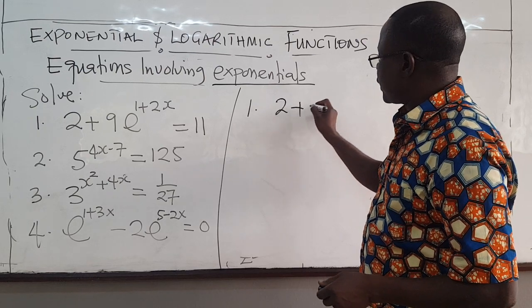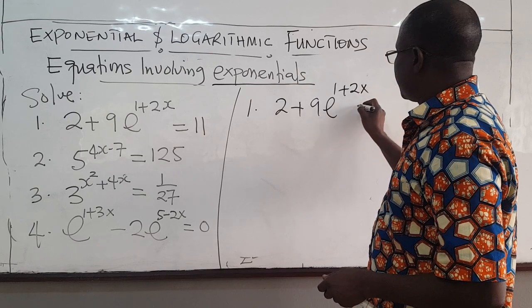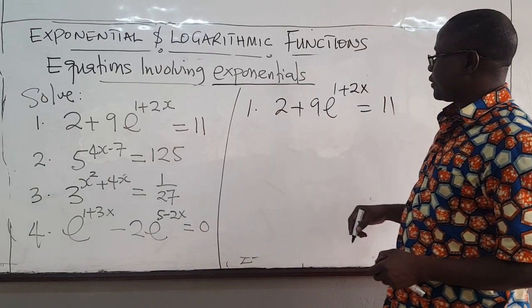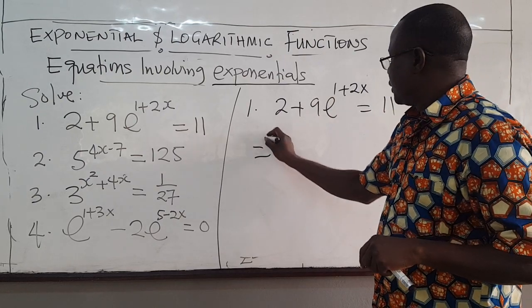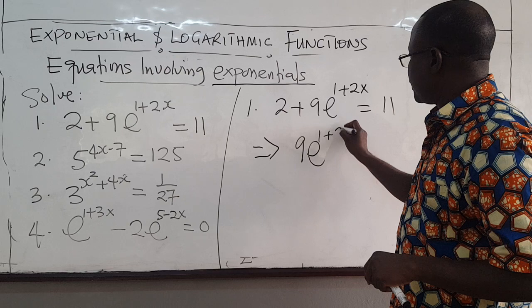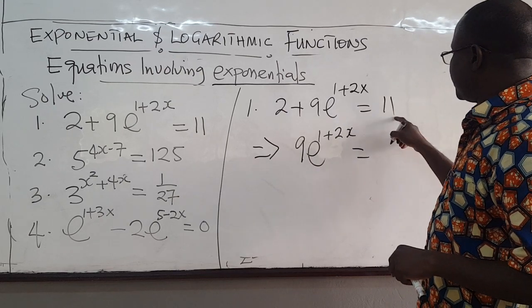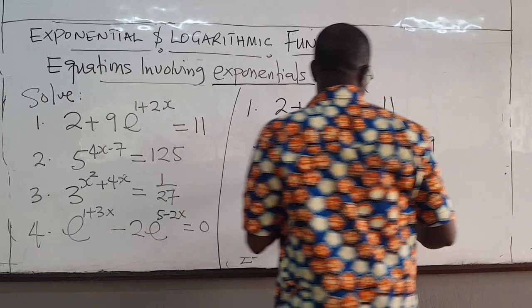Let's solve these ones using what we know about the properties of exponentials. We have 2 + 9e^(1+2x) = 11. We want to solve for x. We can take 2 to the other side of the equation. So we have 9e^(1+2x) = 11 - 2 = 9.